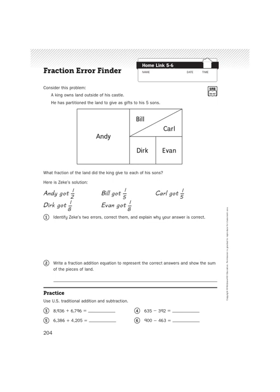Let's read the problem in Homelinks Unit 5 Lesson 6. It says, a king owns land outside of his castle. He has partitioned the land to give as gifts to his five sons. What fraction of the land did the king give to each of his sons?